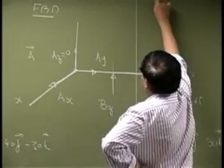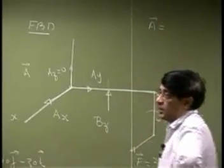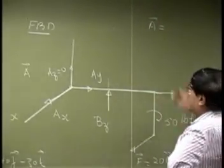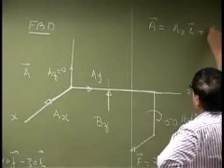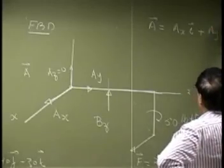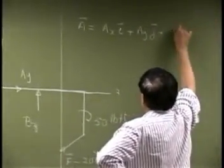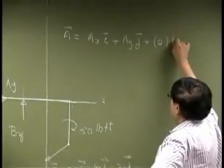Your reaction A, which is the unknown force at point A, that will be AX times i, AY times j, and 0 times k.